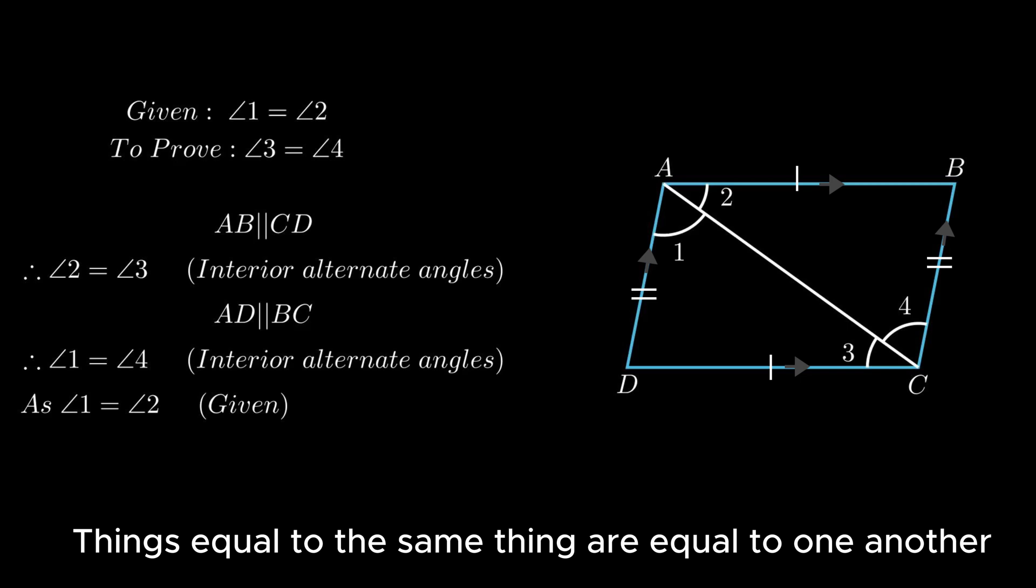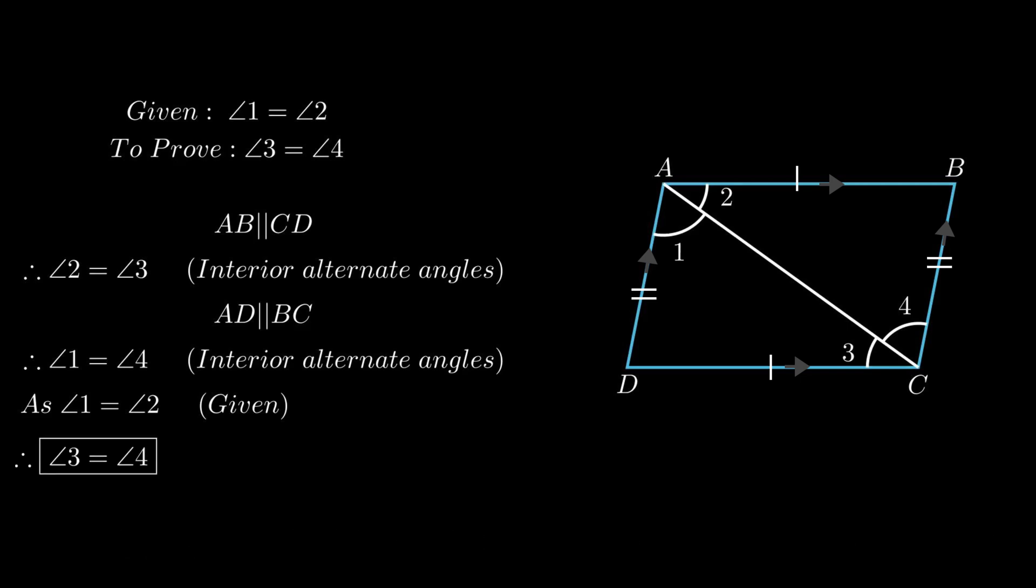We conclude angle 3 equals angle 4, hence diagonal AC bisects angle C.